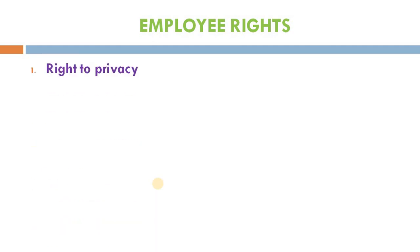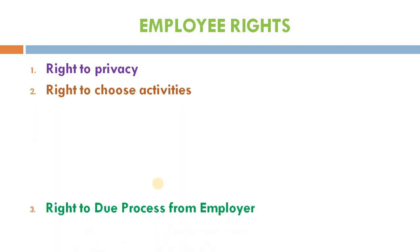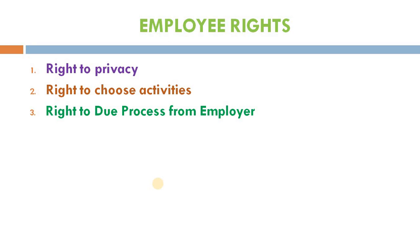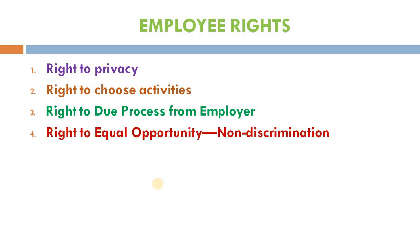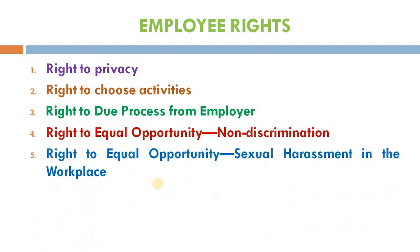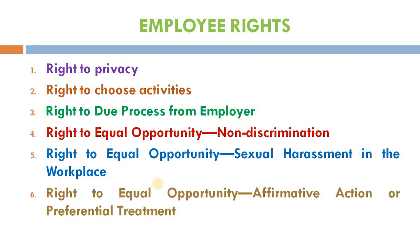Let me explain employee rights under six subheadings. First, the right to privacy. Second, right to choose activities. Third, right to due process from employer. Fourth, right to equal opportunity — non-discrimination. The fifth also comes under right to equal opportunity: sexual harassment in the workplace. And the sixth, also under right to equal opportunity, is affirmative action or preferential treatment.